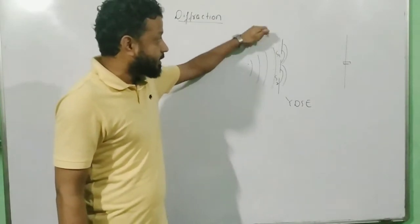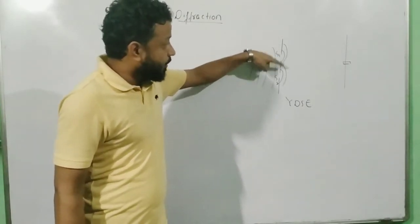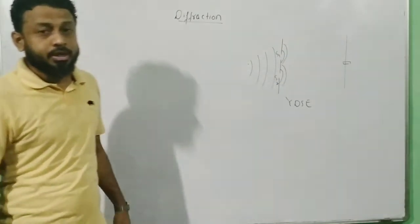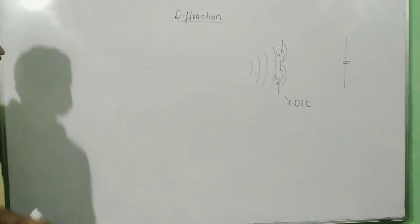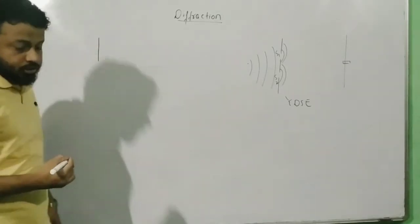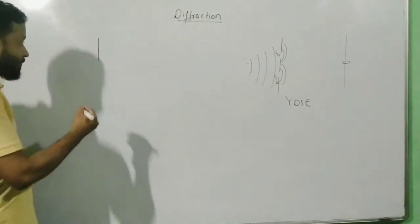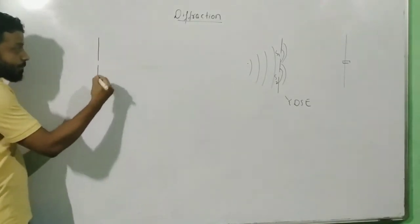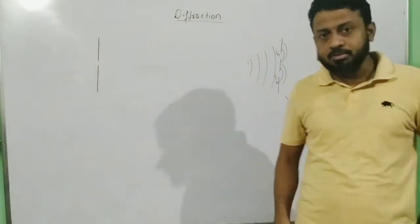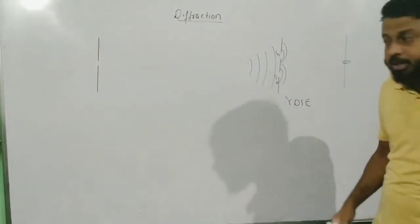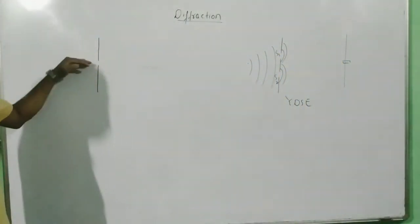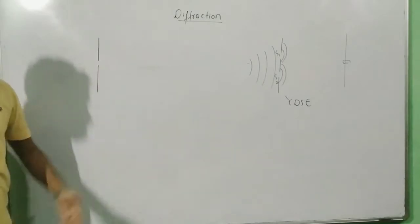Remember one thing: in YDSE, the two wavefronts from two different sources overlap each other to produce the interference phenomena. Now what exactly is diffraction? Diffraction happens because of one slit only — there are no two slits. So the very first question that comes to mind is: how is this possible? Because we need two sources to overlap each other, but that is not happening here.